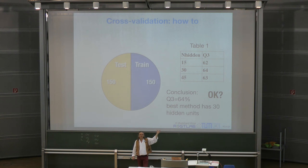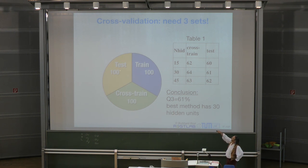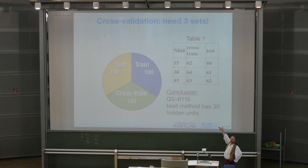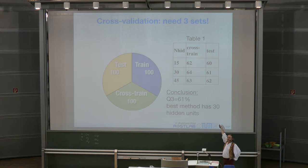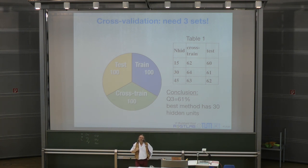What you should have done instead is a three-fold split: training set, cross-training set, and test set. This table should be done on the cross-training set — and on the cross-training set you say, '30 is the best.' Now you apply to the test set, and see that it may not be the best there. But that's what you should stick with. Your statement is: I believe the best method is 30 hidden units, and my prediction accuracy is 61%.